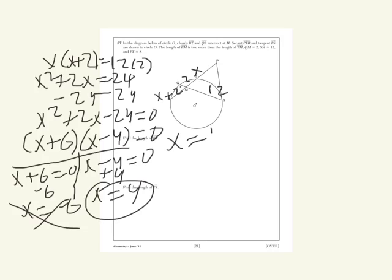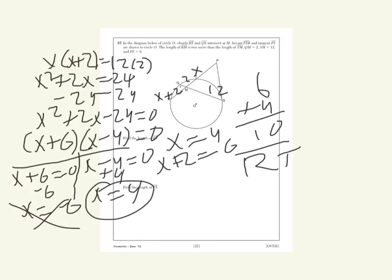You have X equals 4, and X plus 2 equals 6, and RM equals 6, TM equals 4, so 6 plus 4 equals 10, so your total length of RT equals 10.